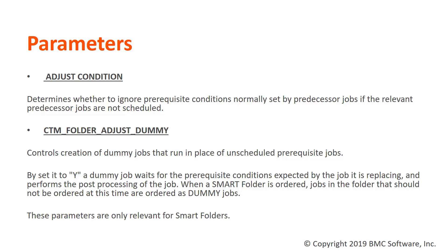In order to achieve the job to run, there are two parameters involved. The first is at the smart folder definition called Adjust Condition. It is located under the prerequisites tab and it needs to have a value set to yes. This parameter determines whether to ignore prerequisite conditions normally set by predecessor jobs if the relevant predecessor jobs are not scheduled.